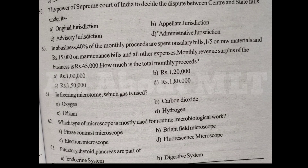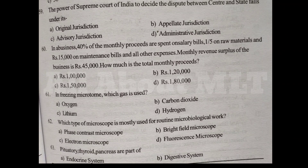The power of Supreme Court of India to decide the dispute between centre and state falls under its Option A original jurisdiction, Option B appellate jurisdiction, Option C advisory jurisdiction, Option D administrative jurisdiction. Answer is Option A original jurisdiction.